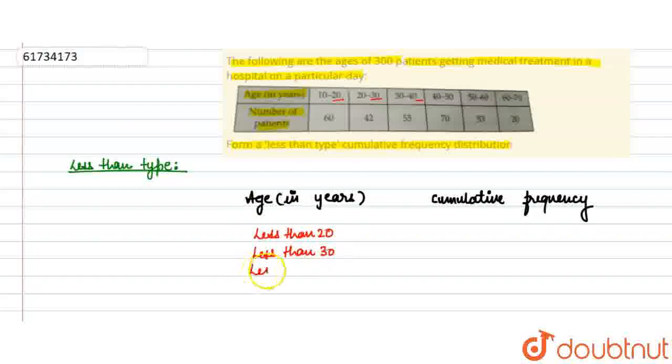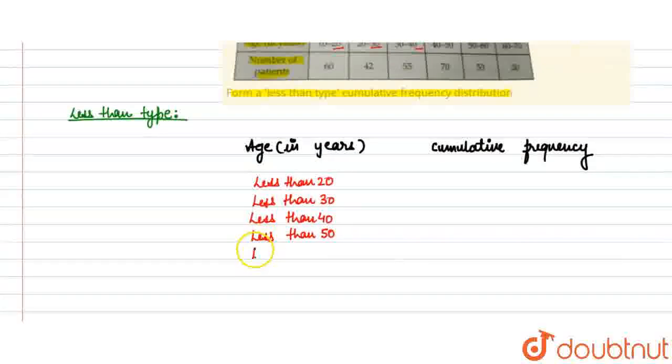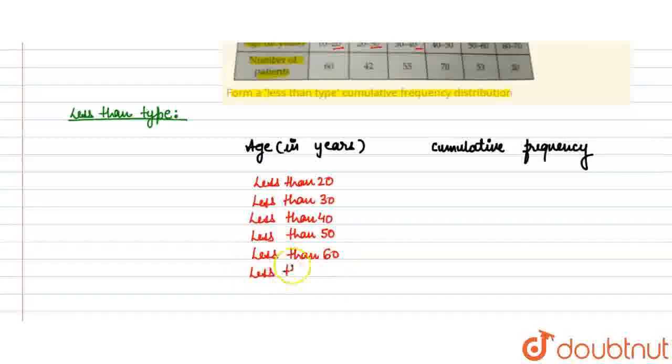Next, less than 40. Next, less than 50. Next है, less than 70 तक लिखना है. Less than 60. And last, less than 70. Cumulative frequency कैसे निकालेंगे, पहली 60 हो गई. Next,